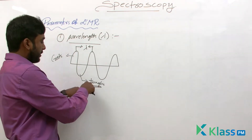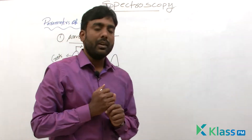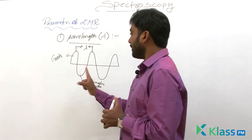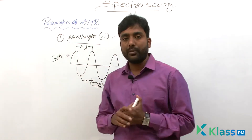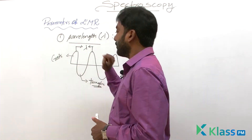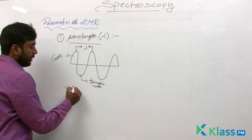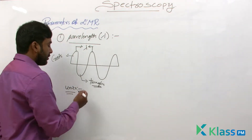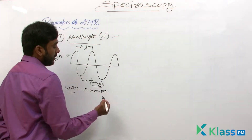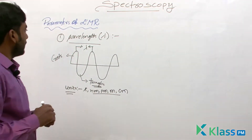You can measure the distance between two successive crests or between two successive troughs, but not both — it would become double. Successive means one immediately after the other. The distance between two successive crests or troughs is called wavelength. The various units used for wavelength are angstroms, nanometers, picometers, and also meters and centimeters.